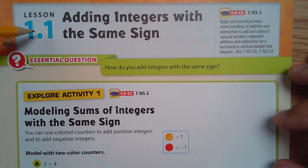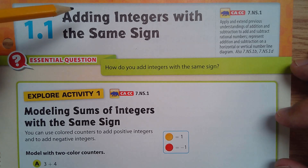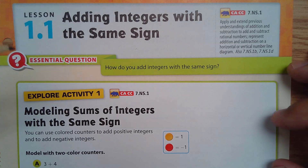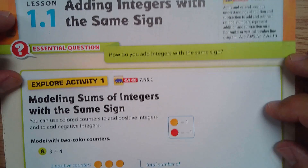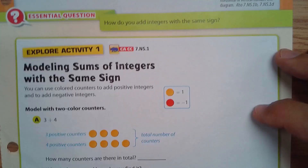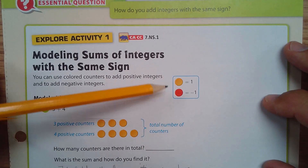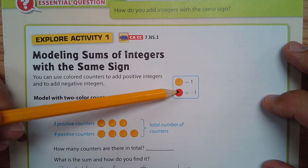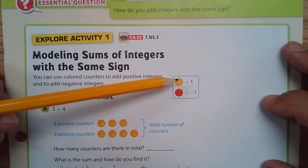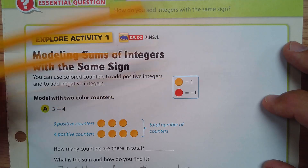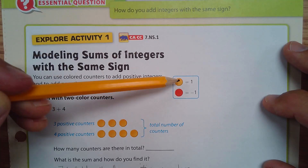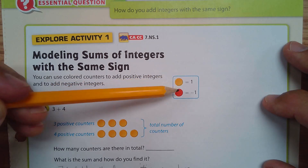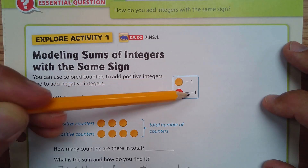Lesson one: adding integers with the same sign. Integers are the positive and negative whole numbers. Orange counters will count as positive one and red counters will count as negative one.